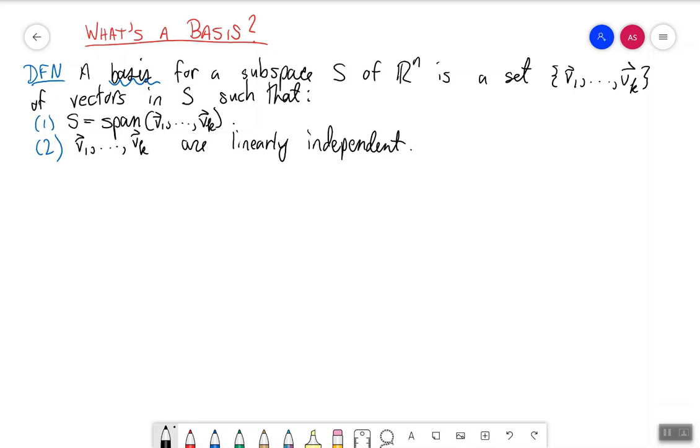You might ask, well, we already know that S is spanned by the vectors v1 through vk, so that tells us all we need to know about S, right? Well, the idea for number two is we want to specify S with as little information as possible. We don't want any redundancy. We don't want any waste.